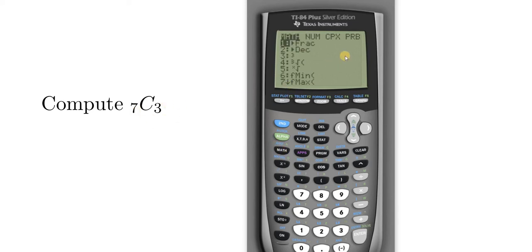Now you have to find the command. So the command is in the PRB menu. So what you want to do is hit the right arrow key until you get to that menu. Then you look for NCR, so it's the third one. So you can hit the number 3 or you can just use the arrow keys to navigate your way there.